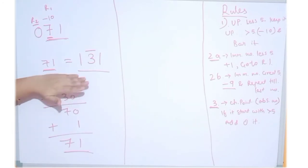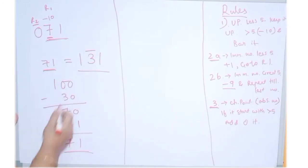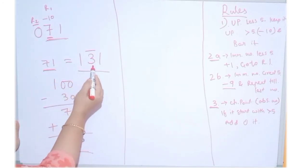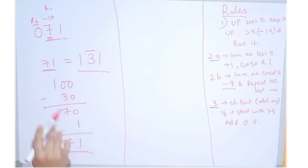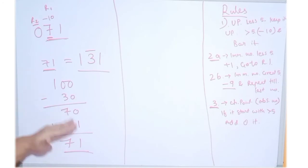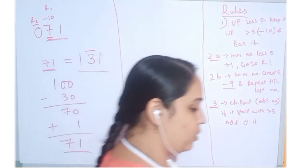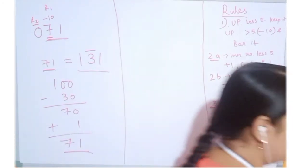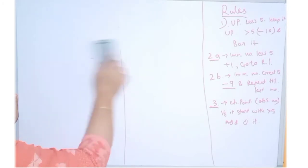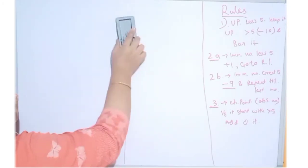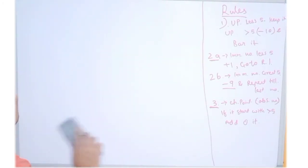You can verify this way also: separate positive and negative digits — whatever has a bar is negative, and the rest are positive. Accordingly you can verify whether what you are doing is correct or not. We will verify a few more examples. This time let us try 3-digit and 4-digit numbers. Let us add one example so that you don't get any confusion.